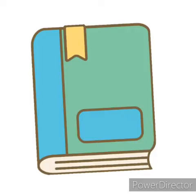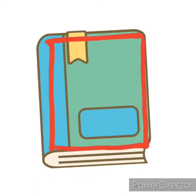Now let us see pictures that are rectangle in shape. Children, what is this? This is a book, and the book is rectangle in shape. Now look at this picture — you watch cartoons in it. Do you know what this is?